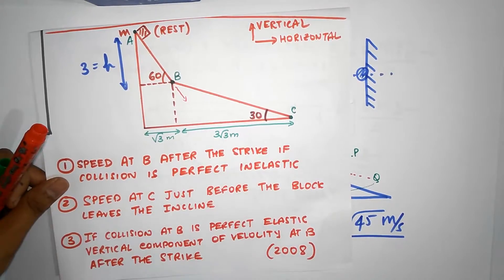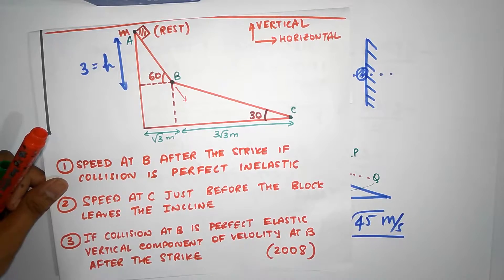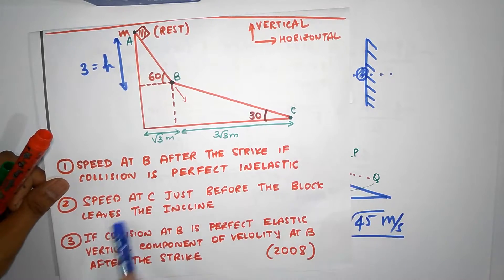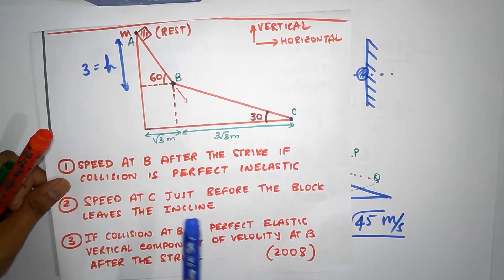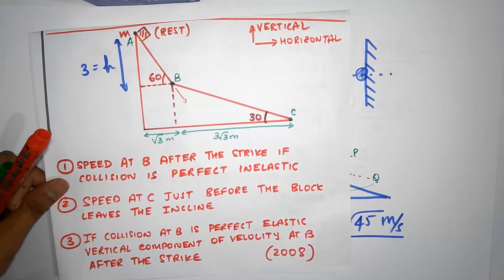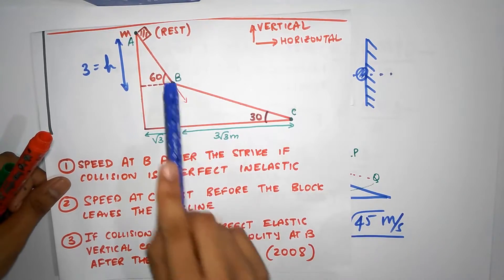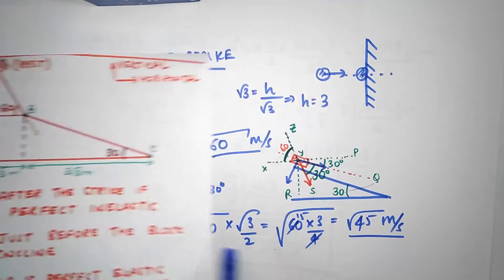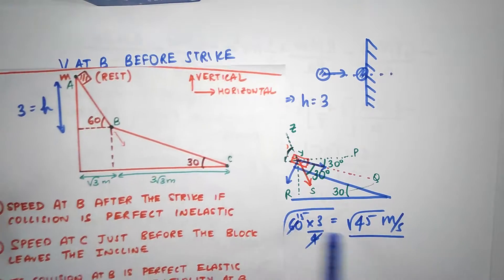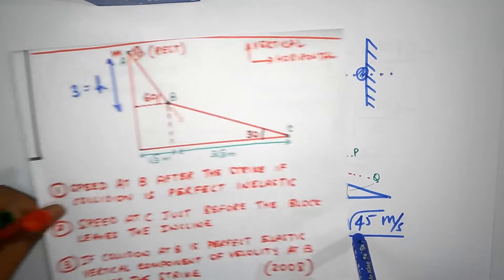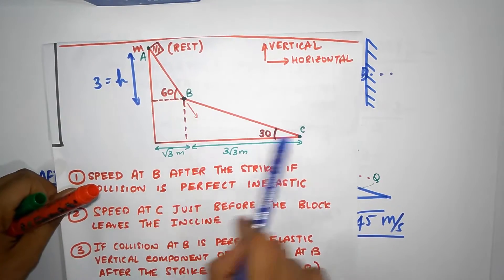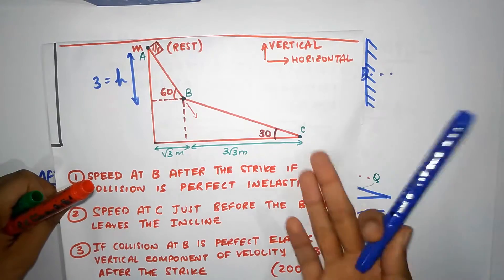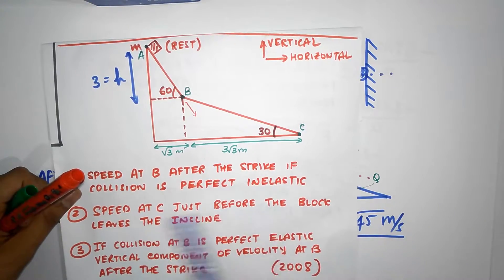Speed at B just after the collision is root 45. The next question is the speed at C just before the block leaves the incline. That's easy — just use energy conservation. We know the speed at B is root 45, so calculate the height and apply energy conservation. That's homework for you — pretty straightforward.